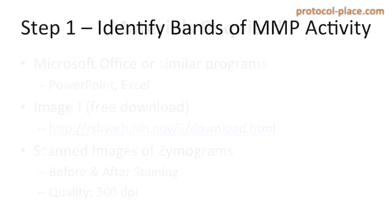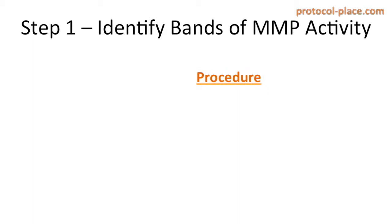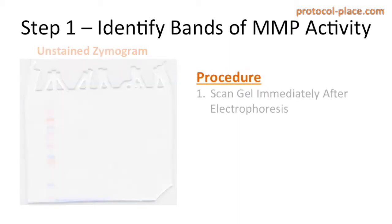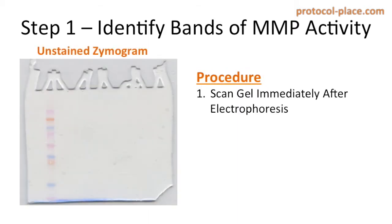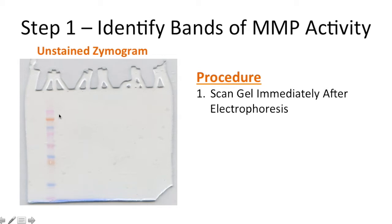The first step in this procedure is to identify the bands of MMP activity based on molecular weight. The way you're going to do that is to first scan the gel immediately after electrophoresis. The reason to scan immediately is that if you scan after washing the gel, the colors will start to fade because the proteins diffuse out of the gel.